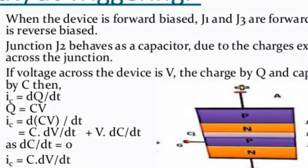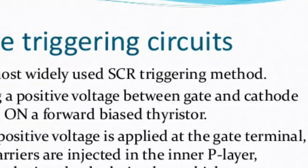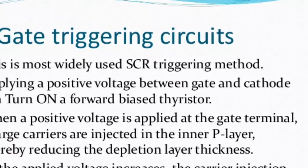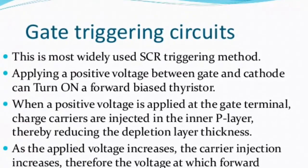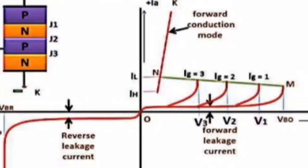In this case, J1 and J3 are already forward biased. In order to trigger the SCR, the thyristor should be in the forward blocking state where the applied voltage is less than breakdown voltage.